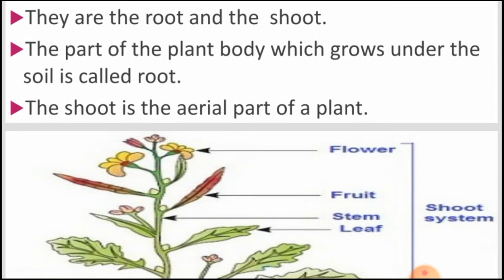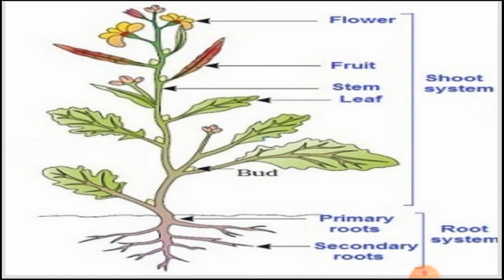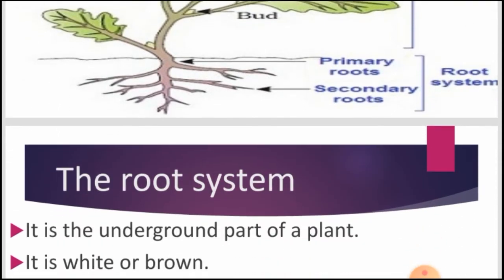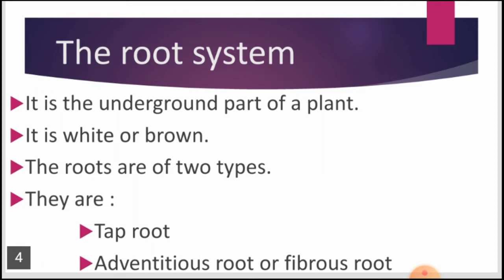To study about the different parts of a flowering plant, let's take an example of a mustard plant. As you can see in the picture, in the mustard plant, the parts above the ground form the aerial part, also called the shoot system, and the parts under the ground form the root system.